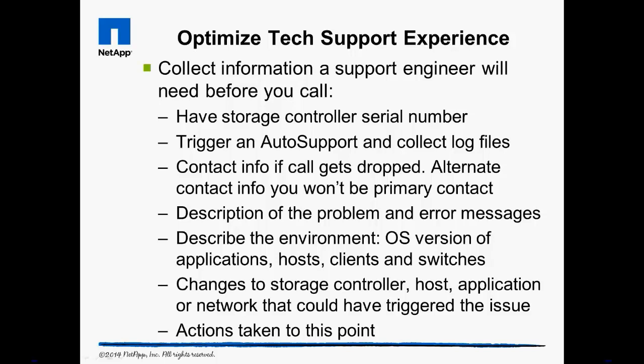Optimize your tech support experience. Before you pick up the phone, take a few minutes to prepare before calling NetApp Technical Support. You will need the system's serial number to open a technical support case. If the system is online, collect the log files and try to send out an auto support. Give your contact information early on in the event you are disconnected, and provide secondary contact information as well. Then, as clearly and concisely as possible, explain what is happening and what errors or symptoms you have seen. Describe the environment the system is providing data to. Is it virtualized? Are only CIFS users affected? What changes have recently been made to the environment? That minor software upgrade to a network switch may have inadvertently disabled a port setting. What actions have you taken to resolve the issue?